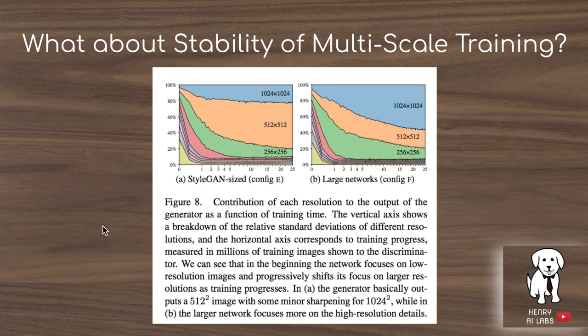Getting away from progressive growing raises the question of stability — because breaking up high-resolution image generation into tractable subscales of 4x4, 8x8, 16x16 makes the problem much easier and results in less training collapse. The ResNet here takes intermediate feature maps and does an element-wise sum to produce the final feature map, allowing you to see exactly how much each feature map contributes to the final output across different training iterations.